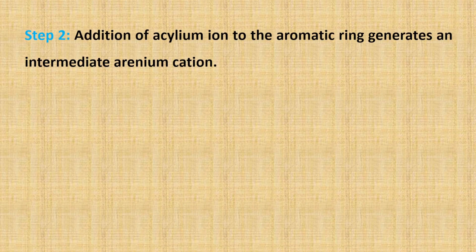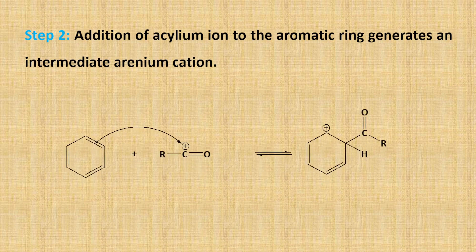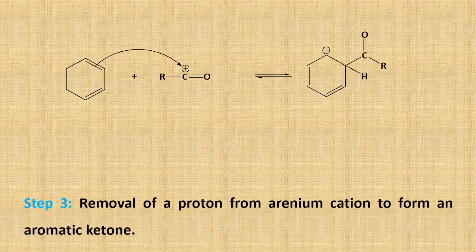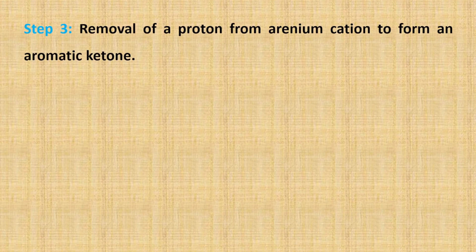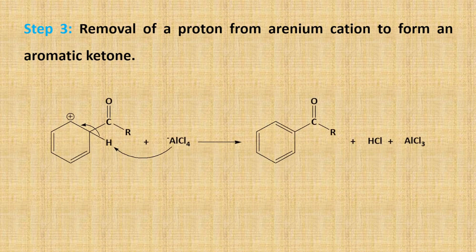Step 2: addition of the acylium ion to the aromatic ring generates an intermediate arenium cation which is resonance stabilized. The positive charge delocalizes over the entire benzene ring. Step 3: removal of a proton from the arenium cation by a base forms an aromatic ketone.